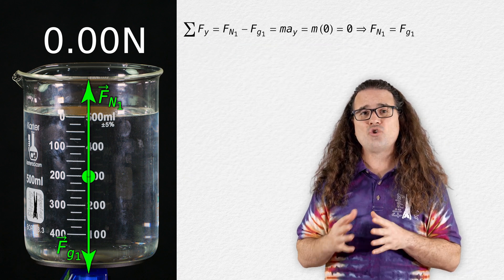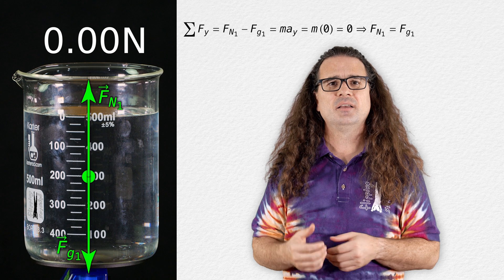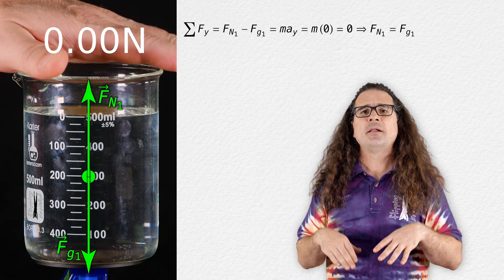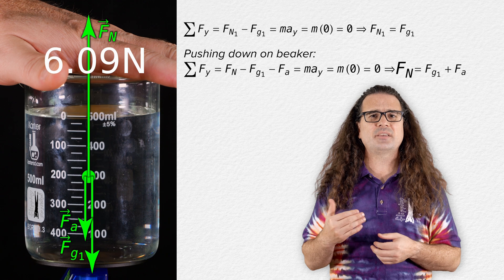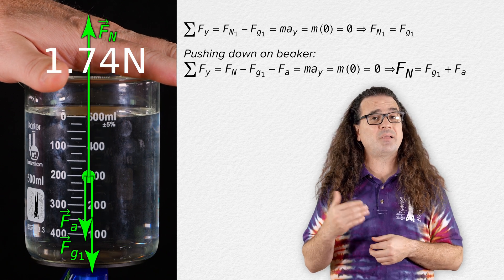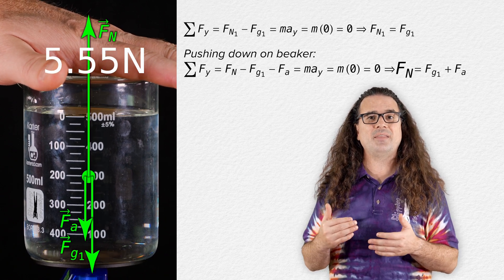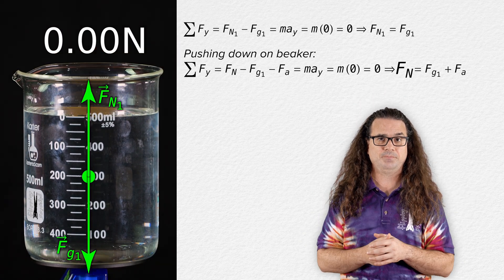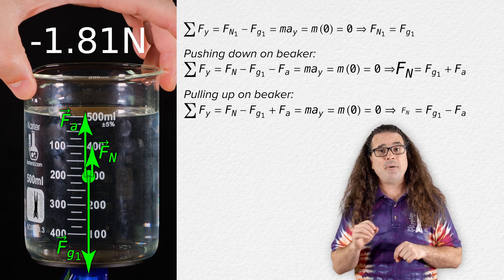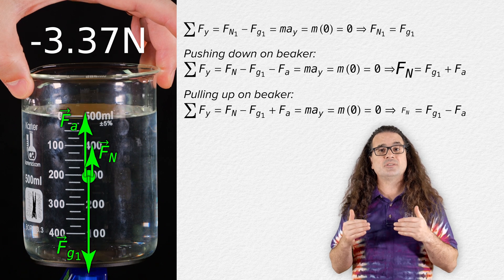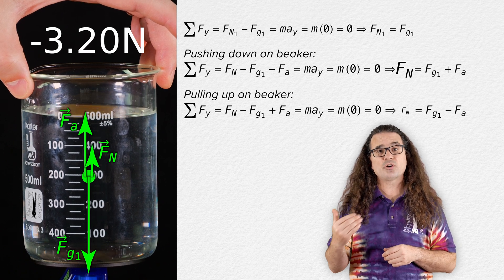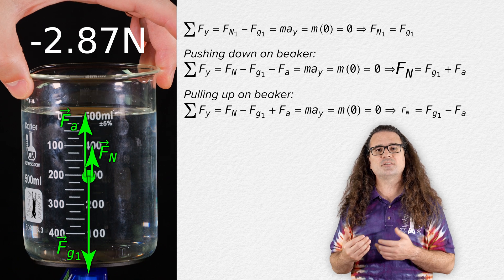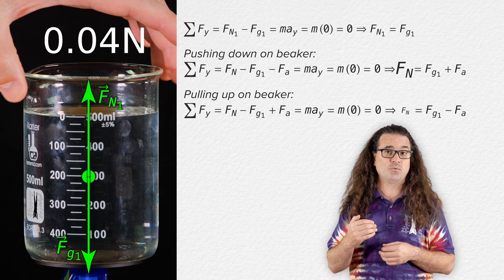To demonstrate that the normal force or reading on the scale changes even when the weight of the object does not change: if I push down on the beaker, the scale measurement goes up because I am applying a downward force on the beaker and the upward normal force increases to keep the beaker from accelerating in the y direction. And if I pull up on the beaker, the scale measurement goes down because I am applying an upward force on the beaker and the upward normal force decreases to keep the beaker from accelerating in the y direction.